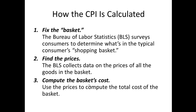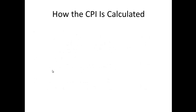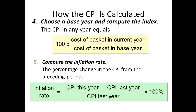The third step is to compute the basket cost. Basically, you're taking the price of the good times the quantity of the good, and you get the basket cost — how much those items in the basket cost. The fourth step is to choose a base year and compute the index. The fifth step is to compute the inflation rate. The first three steps are directly related to calculating the CPI, while steps four and five help us understand the inflation rate and do comparative analysis to see what the change in the cost of living is.